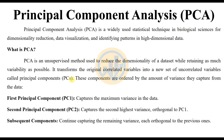Now our discussion topic is Principal Component Analysis. Principal Component Analysis is a widely used statistical technique in biological science for dimensionality reduction, data visualization, and identifying patterns in high-dimensional data. So what is PCA? PCA is an unsupervised method used to reduce the dimensionality of a dataset while retaining as much variability as possible.